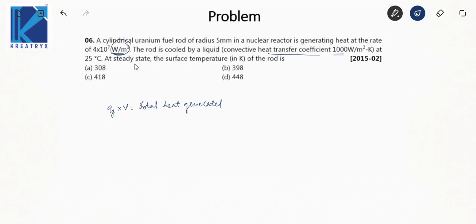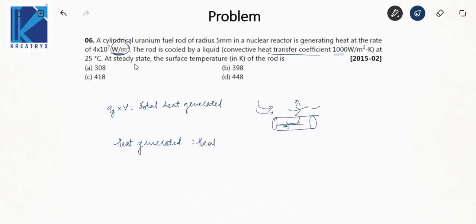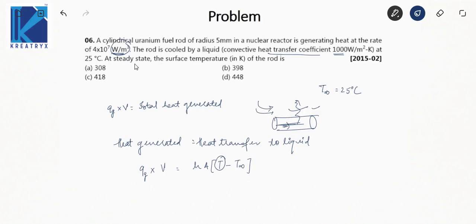This is a simple energy balance question. The total heat generated inside the rod flows outward and is carried away by the fluid. So: total heat generated = heat transferred to the liquid, which gives qg·V = h·A·(Ts − T∞), where T∞ = 25°C.